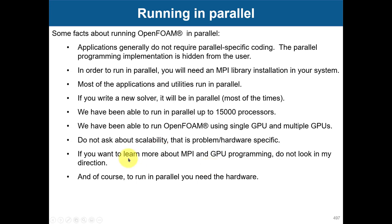Some facts about running OpenFOAM in parallel: you don't need to do any parallel-specific coding — everything has already been done for you. If you run in parallel, you will need to use an MPI library, which usually comes with your system. If you follow the installation instructions, you will use OpenMPI, but there are many versions. Most applications and utilities run in parallel; there are a few that don't, and we'll show you how to find those. The important thing is that the solvers do run in parallel. If you write a new solver or implement a new application, it will be in parallel most of the time.